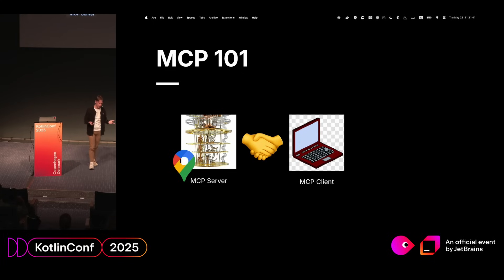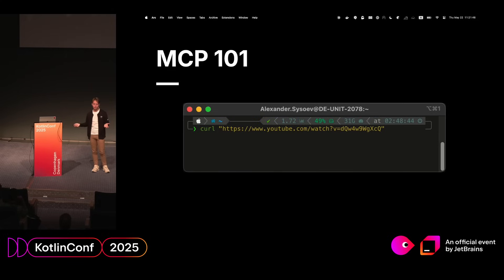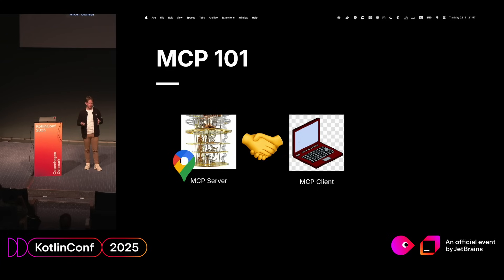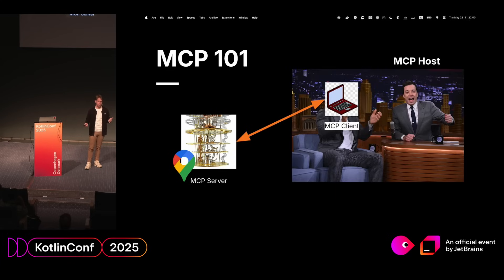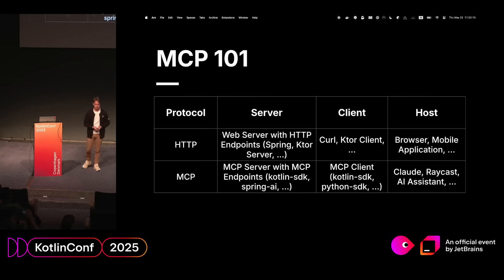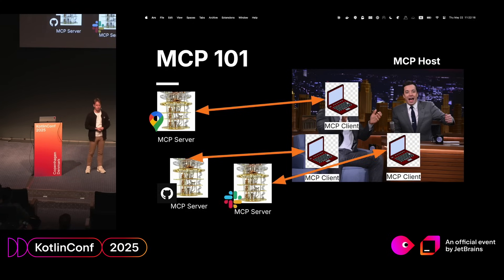But if a client just gets the information, we still need to interpret it — like how curling a YouTube URL gives you nonsense instead of a video. To interpret what a client gets from an MCP server, we need an MCP host. The MCP host knows how to handle this information. In our HTTP analogy, the host is a browser or mobile app. For MCP, it would be Claude, Raycast, or a JetBrains AI assistant — they all can do this.